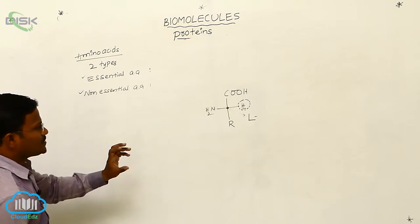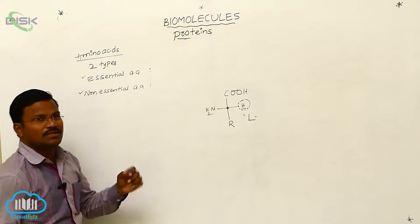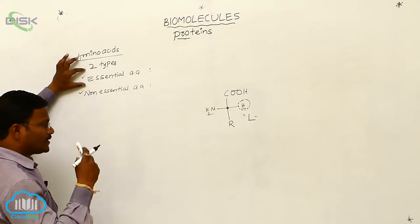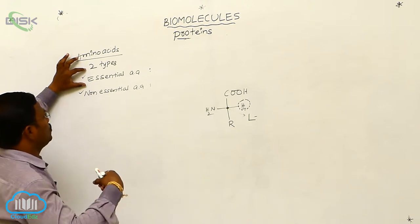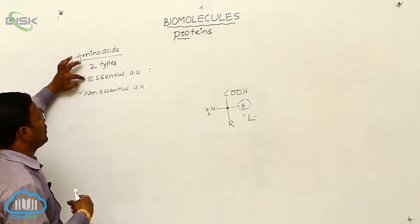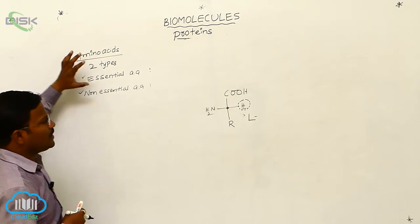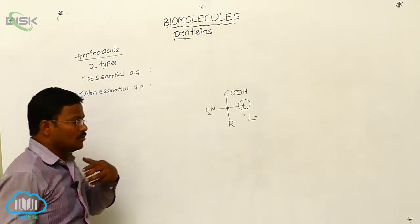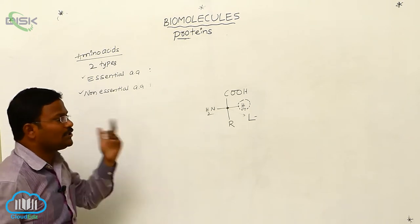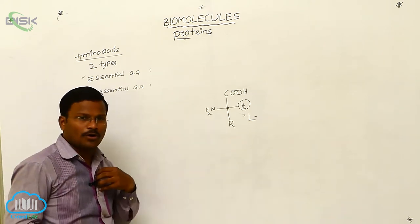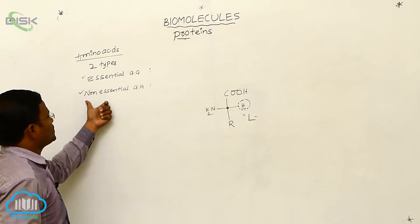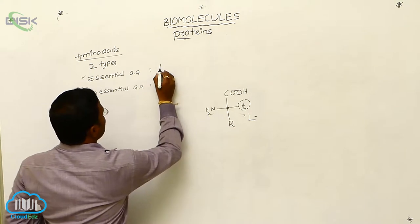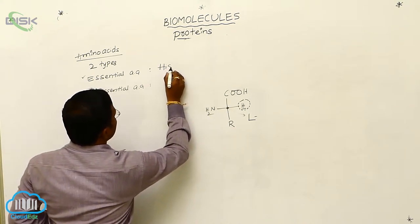Once again, a simple difference: those amino acids which are not biosynthesized in our body and we have to take them through diet from outside our body are called essential amino acids. Whereas those that are biosynthesized in our body — no need to take from outside — are called non-essential amino acids. Here are some examples of essential amino acids: